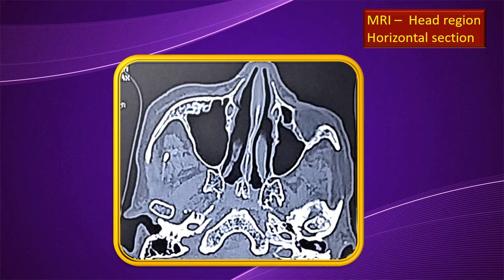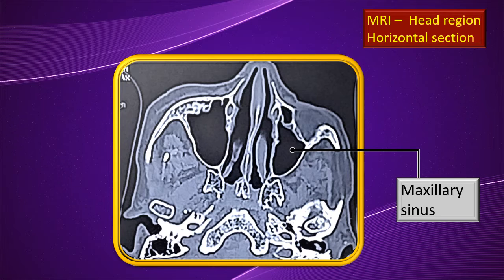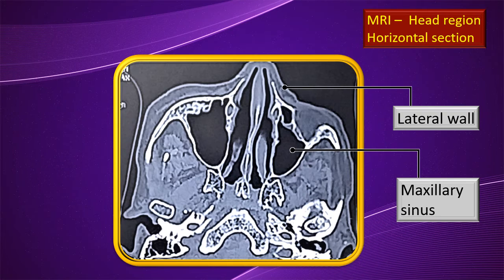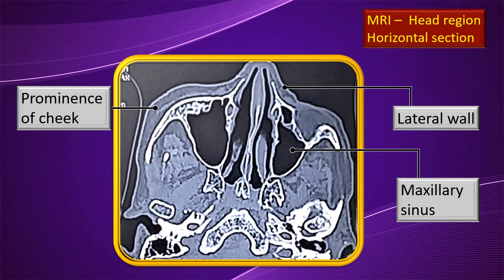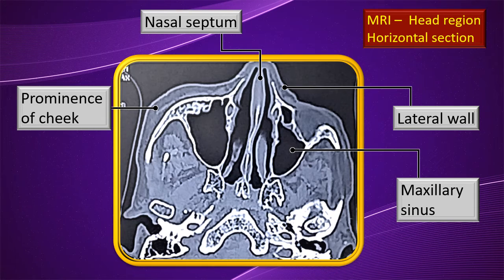For a little more detail: that is the maxillary sinus, and that is the lateral wall of the external nose right in front of the sinus. This is for relative orientation — to show how the sinus is identified when viewed in a living individual from the front. That is the cartilaginous part of the nasal septum.